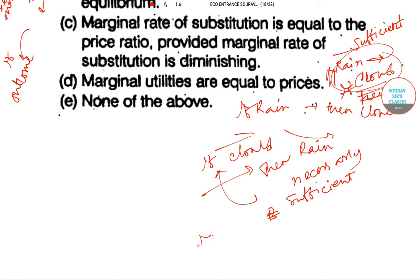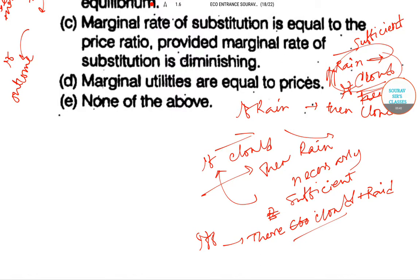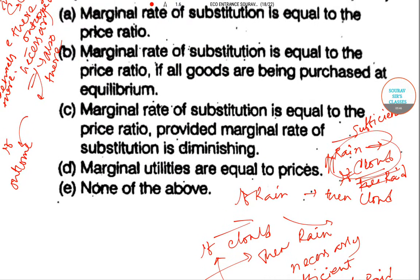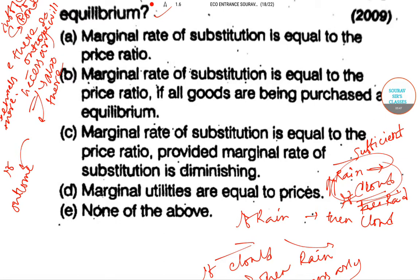Necessary and sufficient, meaning 'if and only if', means both directions hold simultaneously. This is a very important concept for all economics students. The necessary and sufficient condition for consumer behavior is what we need to identify.